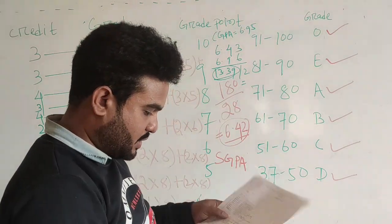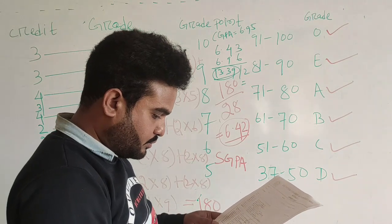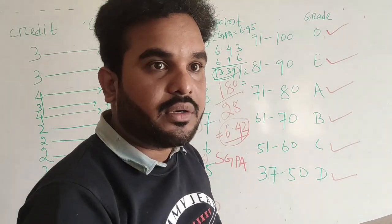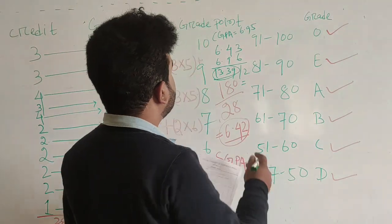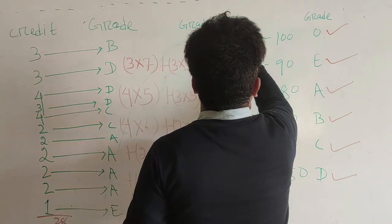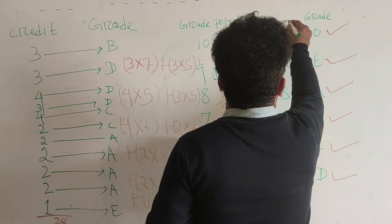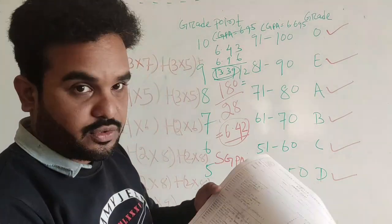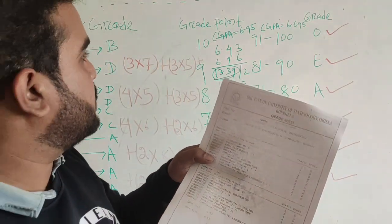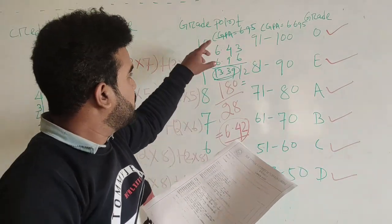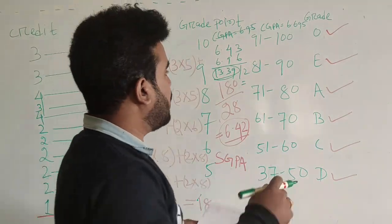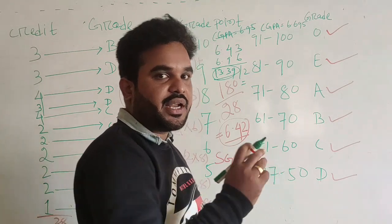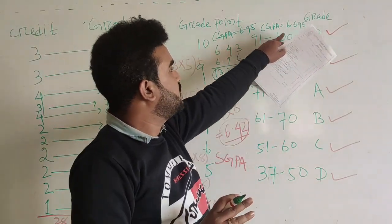CGPA is 6.95. You can see here — 6.96 and 6.695. CGPA is approximately 6.70. So how you can calculate: if you have 2 semesters, divide by 2. If you have 8 semesters, add all 8 SGPs and divide by 8. You will get the CGPA.